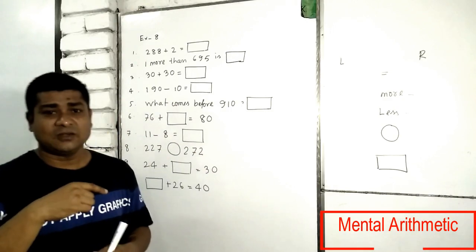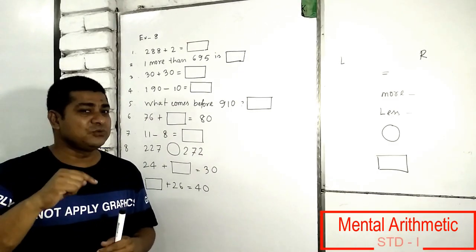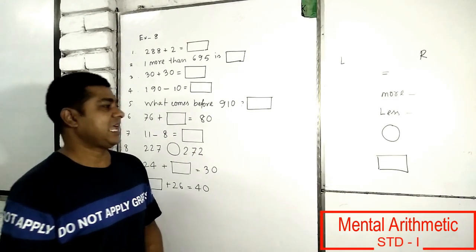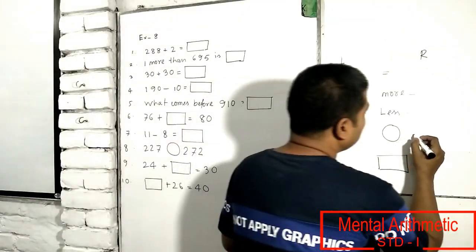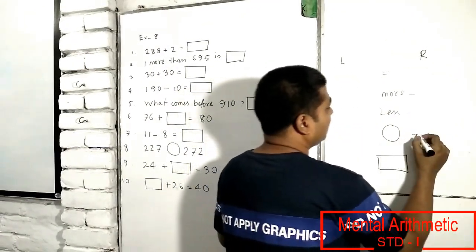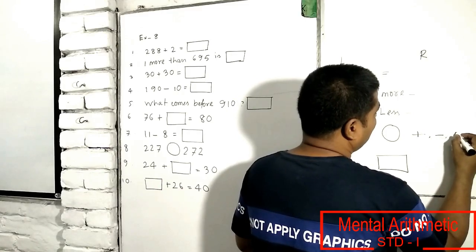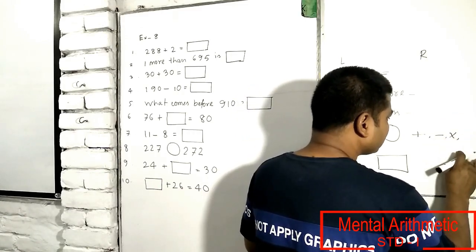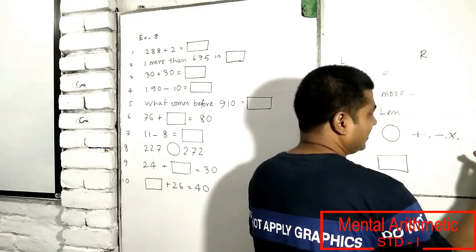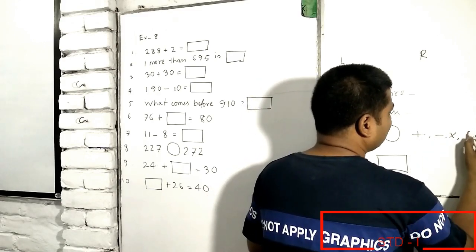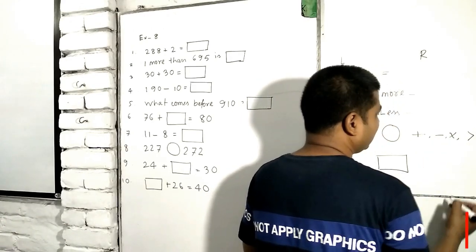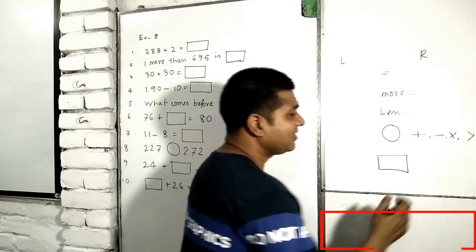And which symbol? Symbols like plus or minus or multiply. Up to standard 1: plus, minus, or greater than, or less than, or equal, that type, etc.